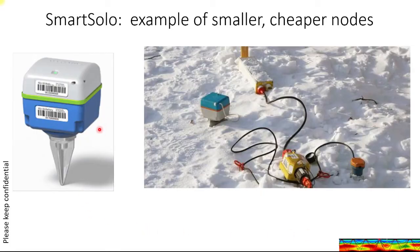Here's an example of some of the revolutionary new receiver hardware. This is a smart solo unit with a self-contained battery, recording unit, GPS, and geophone. And here in the snow, we compare it with some older equipment with a separate battery and recording unit and associated cables.